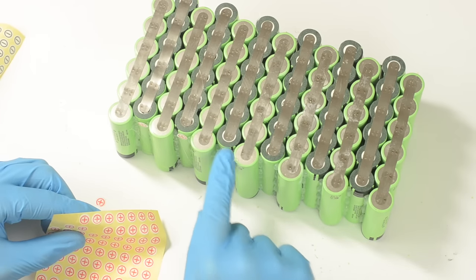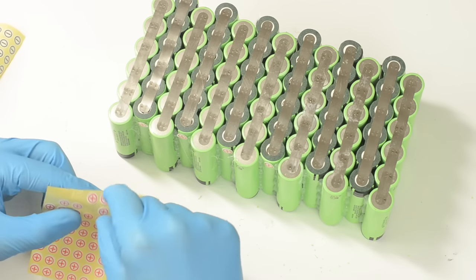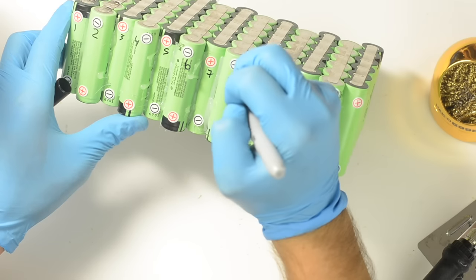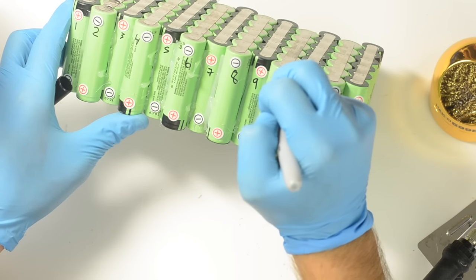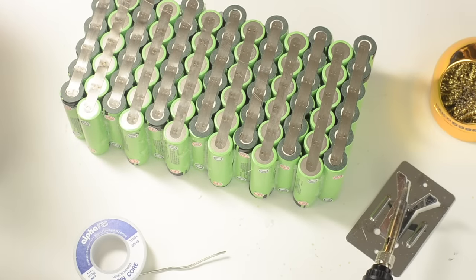The kit also includes positive and negative sticker labels that I like to use just to help me keep everything straight while I'm working on my battery. You can also go through and actually write the cell numbers and positive and negative on the cells as well. This is just another helpful step to help keep everything straight while you're working on it.